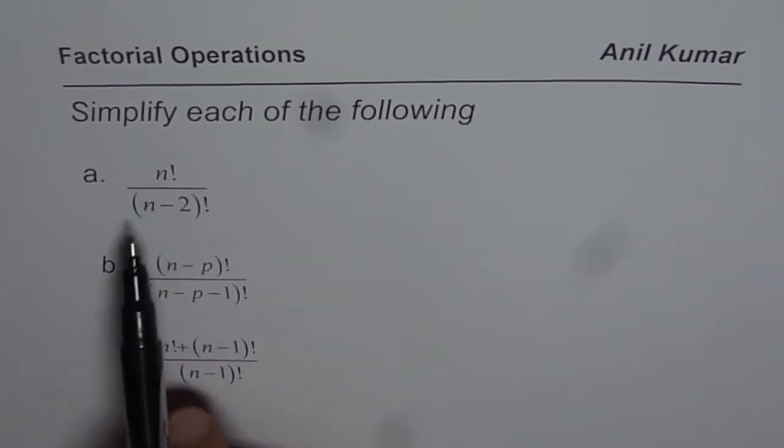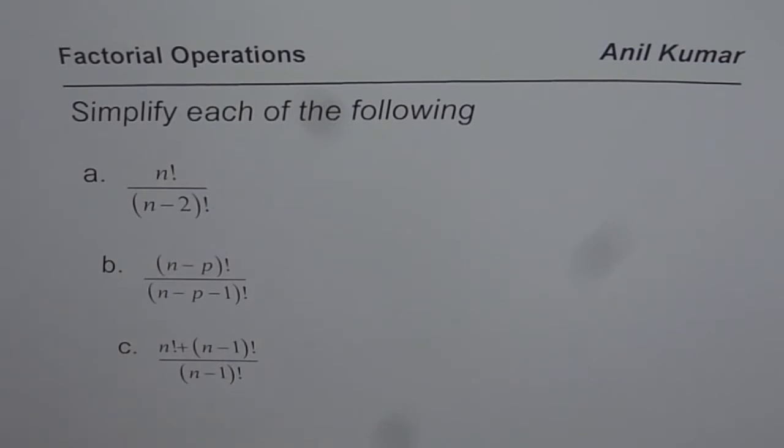n factorial divided by n minus 2 factorial. Then we have n minus p factorial divided by n minus p minus 1 factorial. And the last question here is n factorial plus n minus 1 factorial divided by n minus 1 factorial.